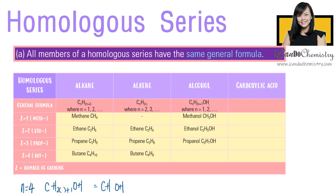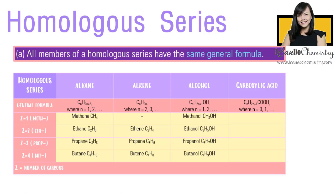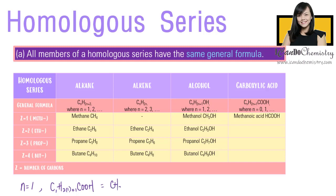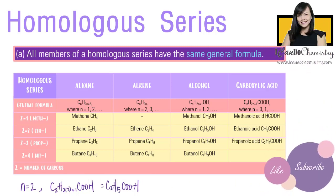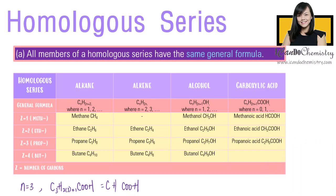The fourth member is butanol, N is 4, hence the formula is C4H9OH. The general formula of carboxylic acid is CnH2n+1COOH, where N starts with 0. The first member is methanoic acid, N is 0, hence the formula is HCOOH. The second member is ethanoic acid, N is 1, hence the formula is CH3COOH. The third member is propanoic acid, N is 2, hence the formula is C2H5COOH. The fourth member is butanoic acid, N is 3, hence the formula is C3H7COOH.